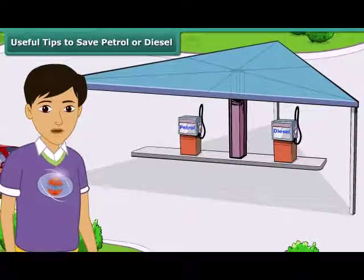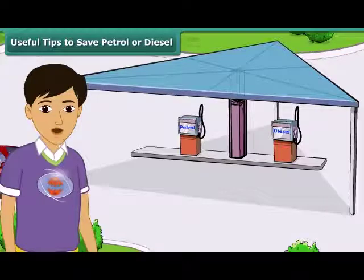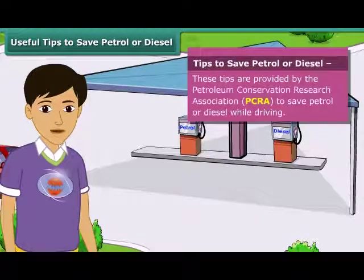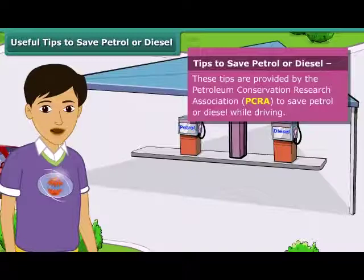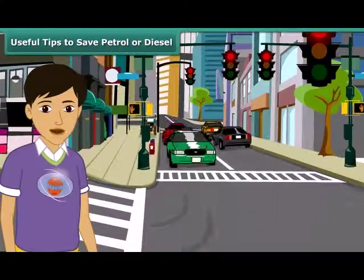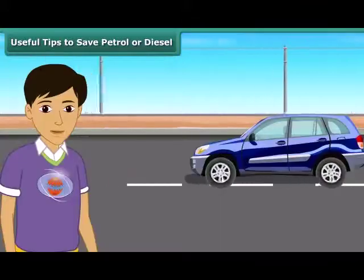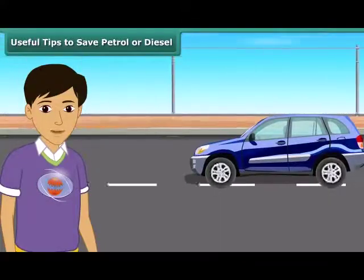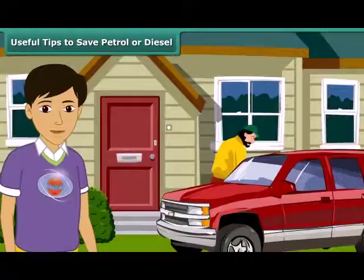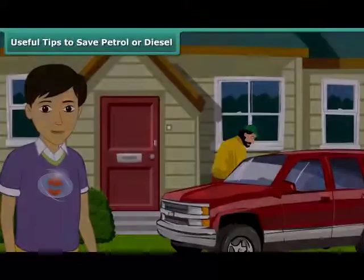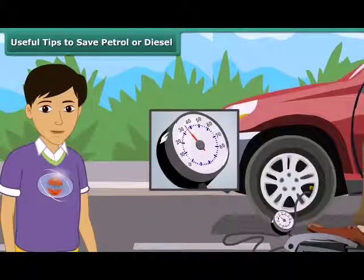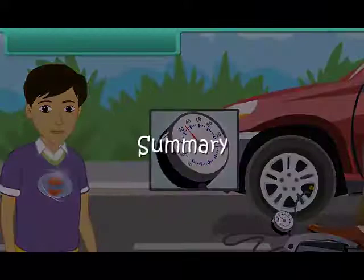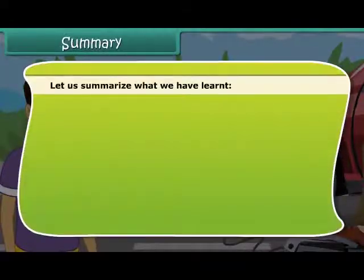Petrol and diesel are exhaustible resources — the amount of them in nature is limited and will deplete one day, so it is important to use these resources carefully. Here are a few useful tips as advised by the Petroleum Conservation Research Association (PCRA): switch off the engine at traffic lights or traffic jams; drive at a constant and moderate speed as far as possible; and ensure regular maintenance of the vehicle and correct air pressure in tires.